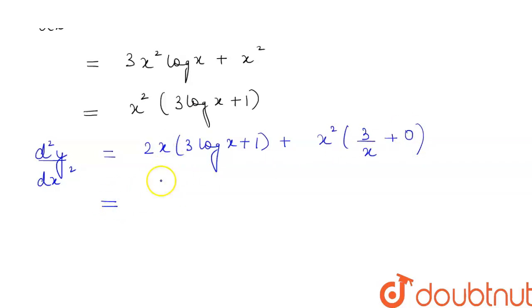Solving this, if we multiply, we get 6x log x + 2x + 3x. If we take x to be common, we are left with